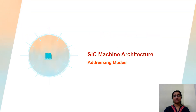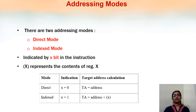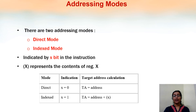Next are the addressing modes, which define how the target address is calculated. There are two addressing modes: direct mode and indexed mode. If the bit X is 0 in the instruction format, it is direct addressing — meaning the operand address is the correct target address. If the bit X is equal to 1, it is indexed addressing, meaning the contents of the X register (index register) are added to the address field to calculate the target address.